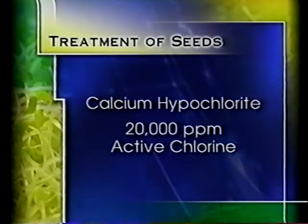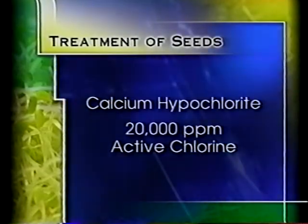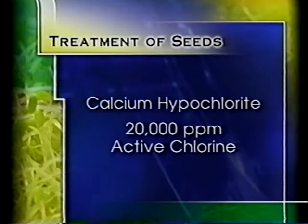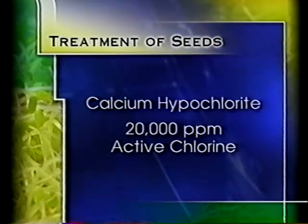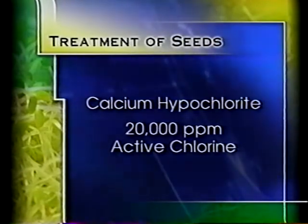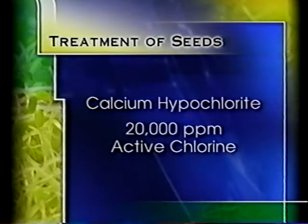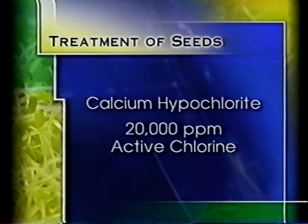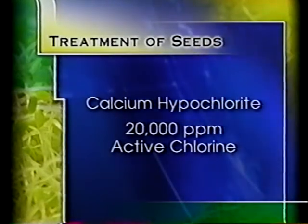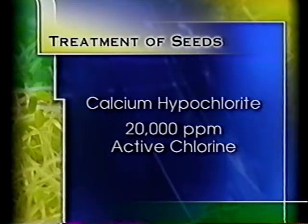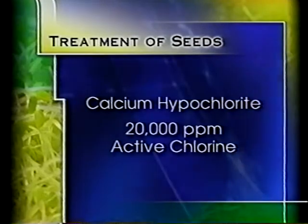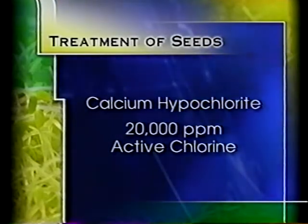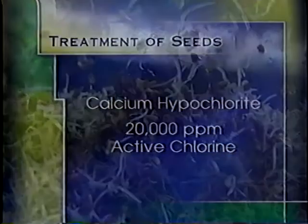Treatment of seeds in a solution of calcium hypochlorite prepared to contain 20,000 parts per million (ppm) of active chlorine is recommended. Calcium hypochlorite is specified rather than sodium hypochlorite or domestic bleach because it doesn't significantly reduce permanent germination for most seed types.